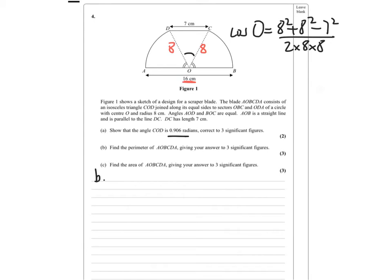For part B, we've got to find the perimeter. We need to find these angles — that angle and that angle are the same. So theta equals (pi minus 0.906) over 2. Once you've got that, you're going to be doing arc length using r times theta, then dividing by 2 pi — you'll find a lot of the pi's cancel. Don't forget to add on the straight bits, the 16 and the 7.